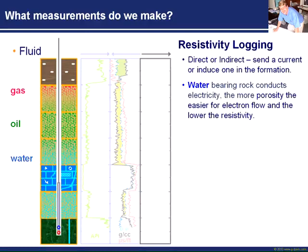The more porosity we have in the system - the more storativity, the bigger the volume of water - the easier it is generally for electrons to flow through and conduct current. So what we tend to find is that in bigger porosity, water-bearing rocks are more conductive than rocks with less porosity, simply because they have more volume of this conductive water in the way.